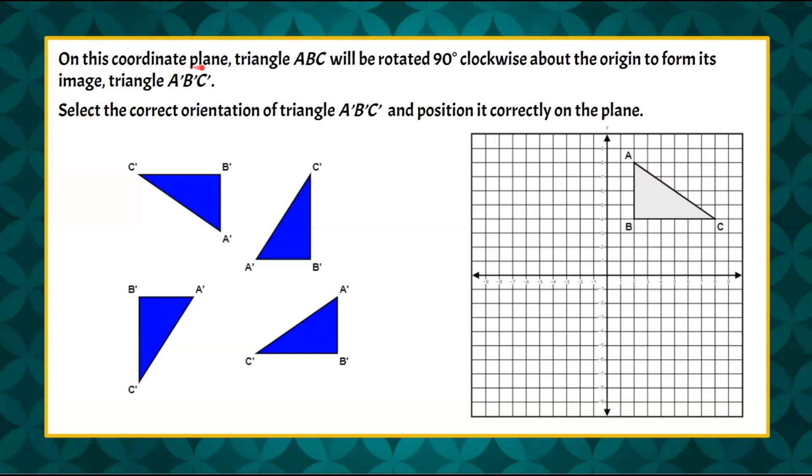On this coordinate plane, triangle ABC will be rotated 90 degrees clockwise about the origin to form its image triangle A'B'C'.